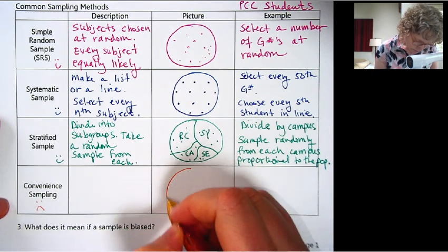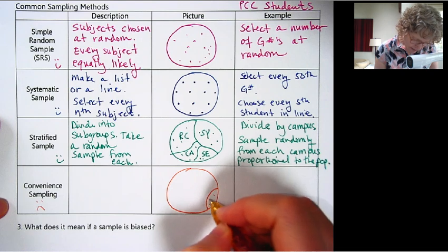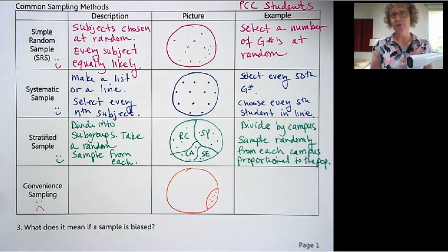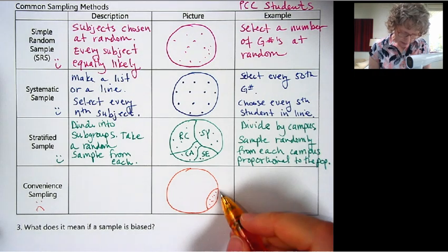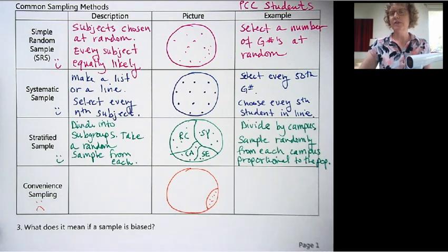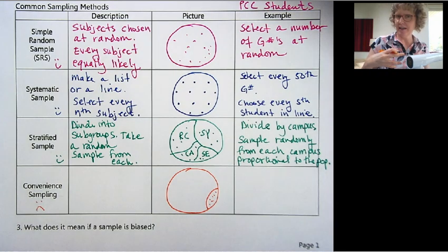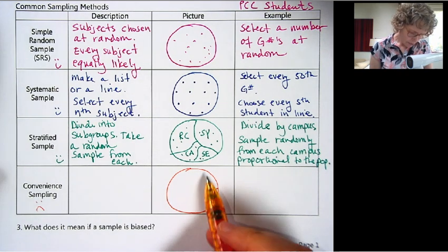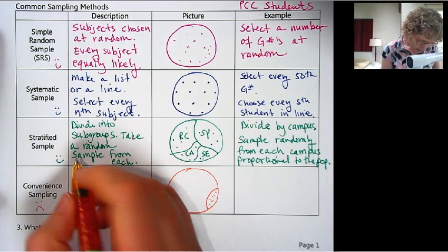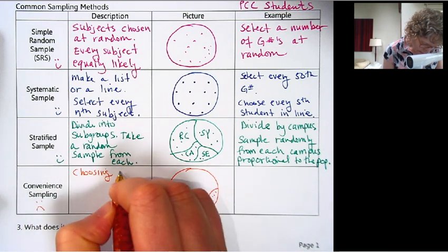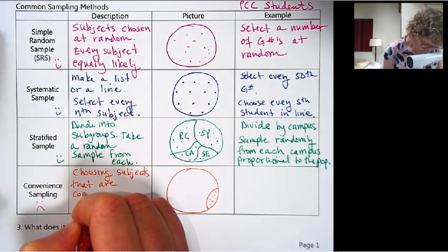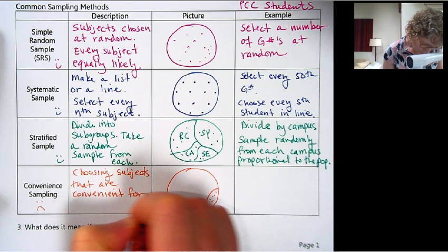Convenience sampling is what it sounds like. You just do something that's easy for the researcher. I'm just going to ask five of my friends. Or I ask my class, but I'm trying to get to know something about the whole PCC population. Or we just stand by the Great Hall, and just get people who come by. But we might not get everyone. We might only certain people want to talk to us, or we might only think to talk to certain people. So that's a convenient sample. This is choosing subjects that are convenient for the researcher.